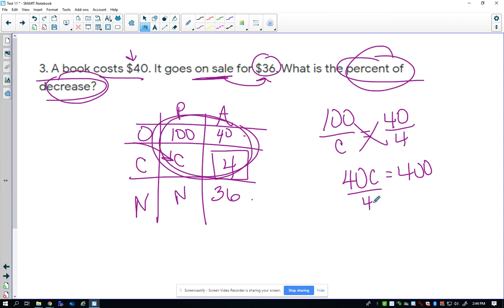So divide by 40 on each side. C is equal to 10. So it is a 10% decrease.